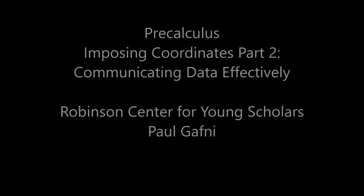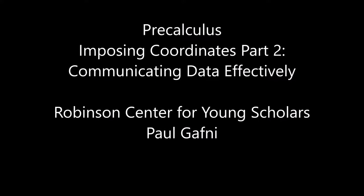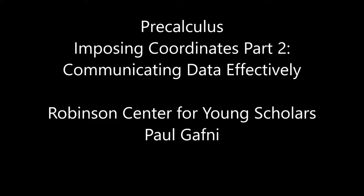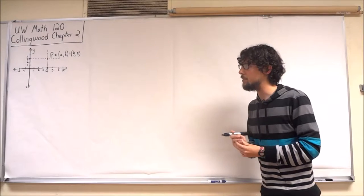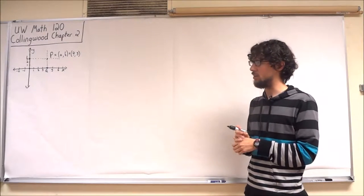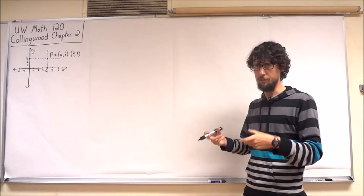We're looking at Collingwood's pre-calculus text. This is the University of Washington's Math 120 textbook. We're looking at Chapter 2. Example 2.2.1 asks us to consider this giant block of data.